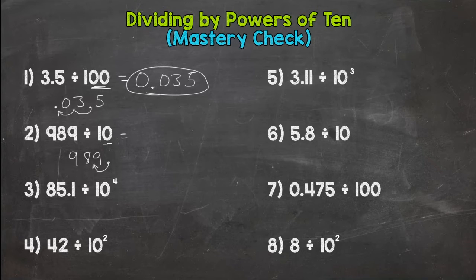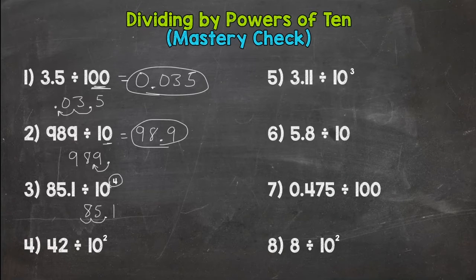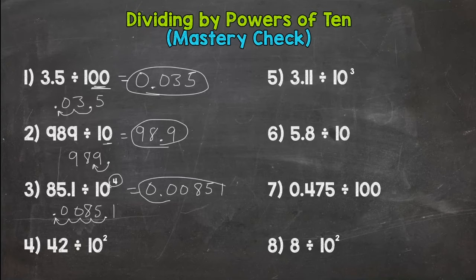Exponent of four, 10 to the fourth power, which is 10,000, so we need to move the decimal four spots to the left to push everything to the right to the correct place value. So one, two, three, four. Fill with placeholder zeros and we get 0.00851 or eight hundred fifty-one hundred thousandths. Number four: